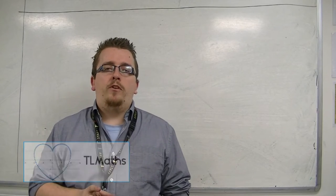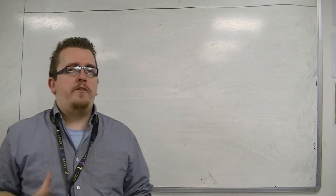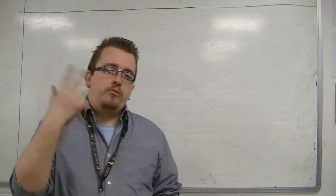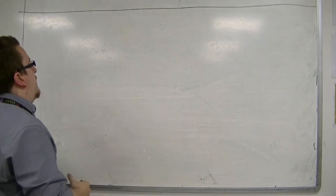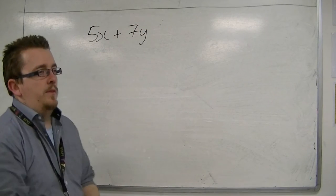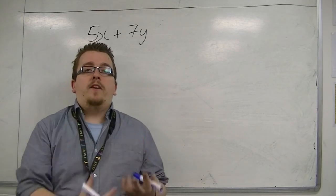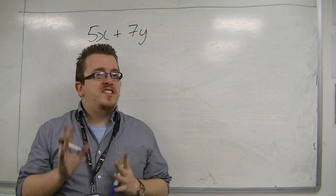So I just want to make a couple of notes on collecting like terms, just to make sure that there is no confusion. In the previous video we were looking at things like five pounds plus seven euros, for example. And we know that we cannot combine the x's and the y's, they are two distinct things.